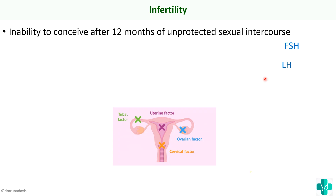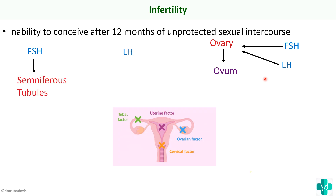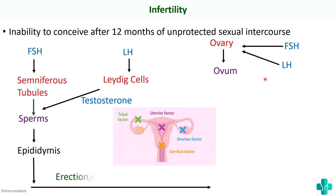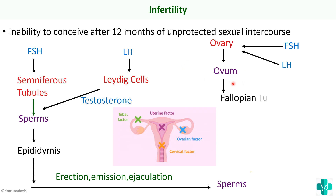There are hormones called FSH and LH which act on the ovary to produce ovulation and thereby release the ovum. Similarly for males, FSH and LH help in the production of sperms — LH acts on the Leydig cells to produce testosterone. Both help in sperm production, and these sperms travel through the epididymis, and during sexual intercourse through erection, emission, and ejaculation, sperms are deposited into the female genital tract.